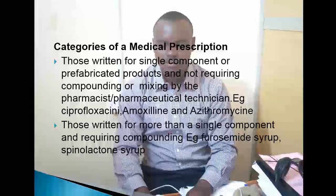Therefore, those written for single components — yaani dawa ambazo zimeandikwa kwa component moja ambazo zimetengenezwa kwa ajili ya matumizi ya mgonjwa — mfano amoxicillin, azithromycin, ciprofloxacin na dawa nyingine nyingi. Aina nyingine ni zile zilizoandikwa for more than a single component and requiring compounding, e.g., frusemide syrup, spironolactone syrup.